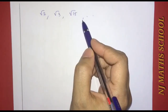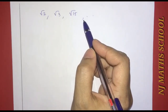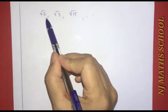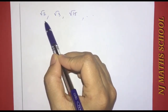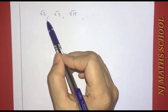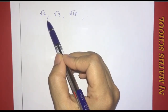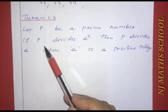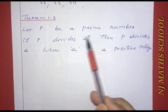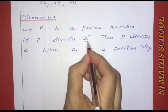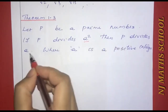In this section, we will be able to prove that certain numbers are irrational. We will use the following theorem: Let p be a prime number. If p divides a squared, then p divides a, where a is a positive integer.